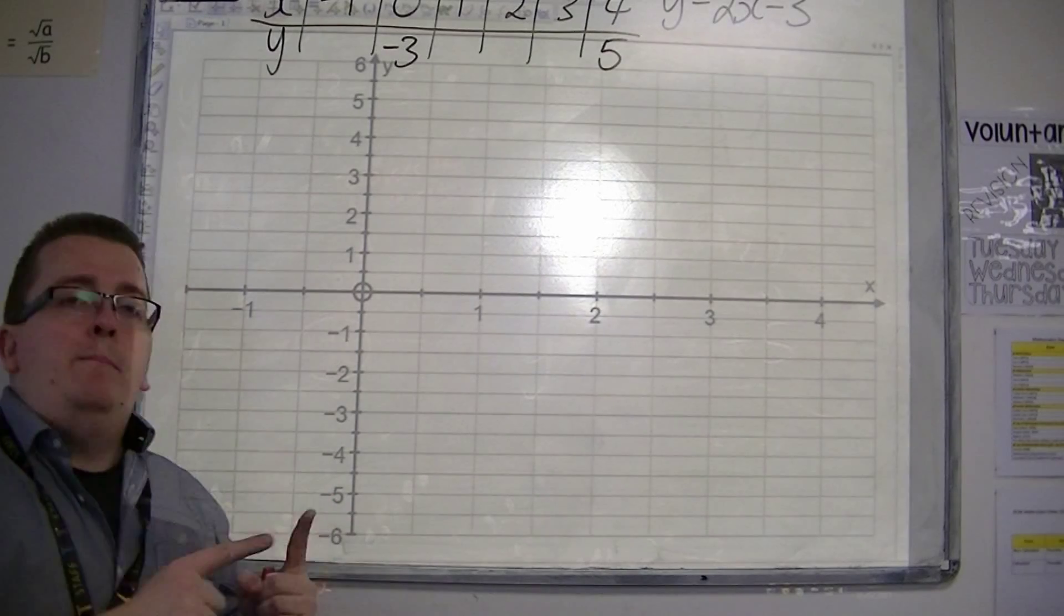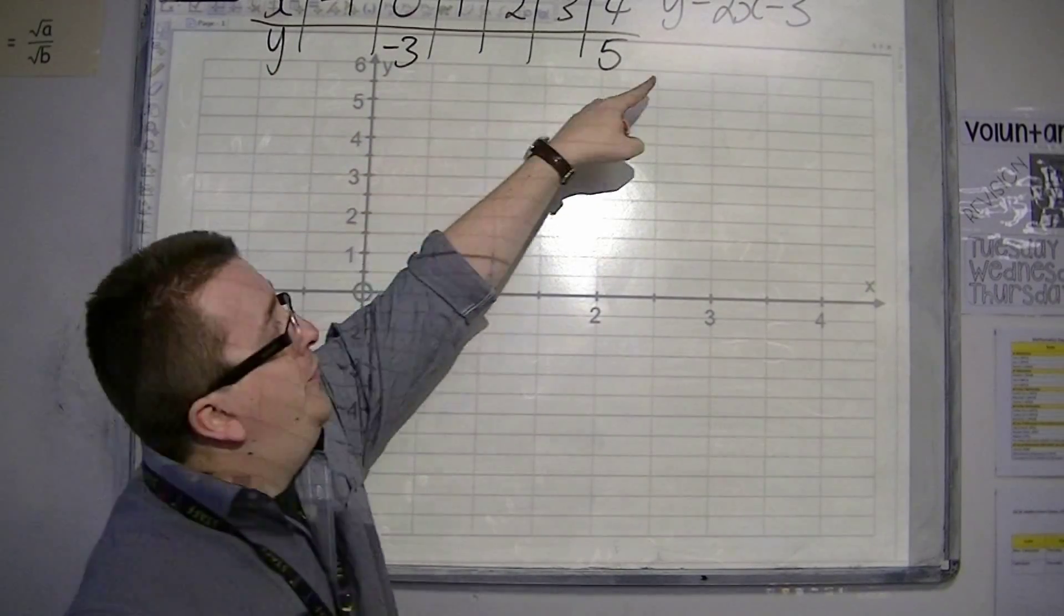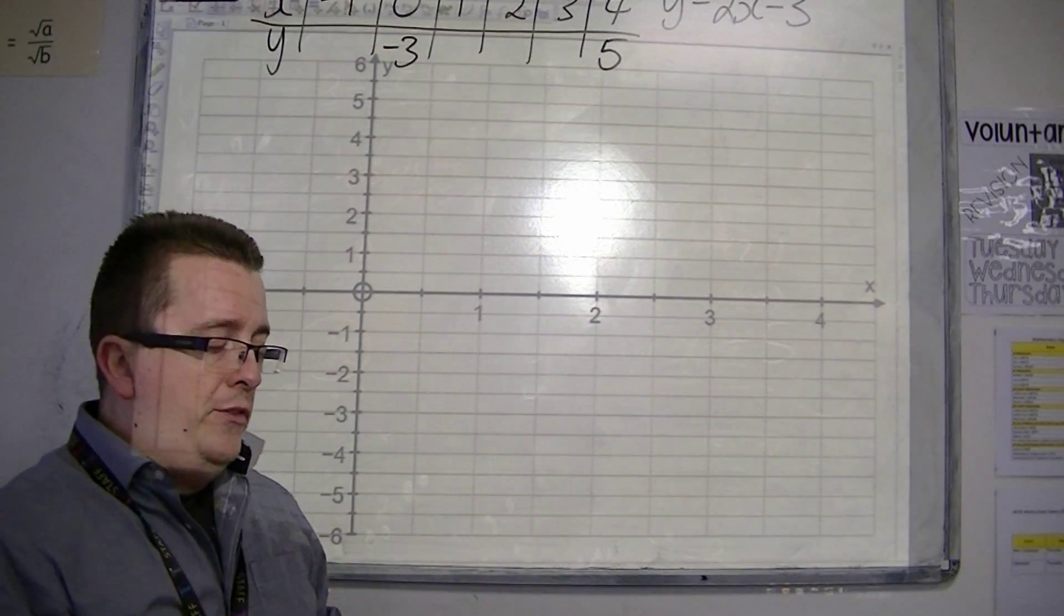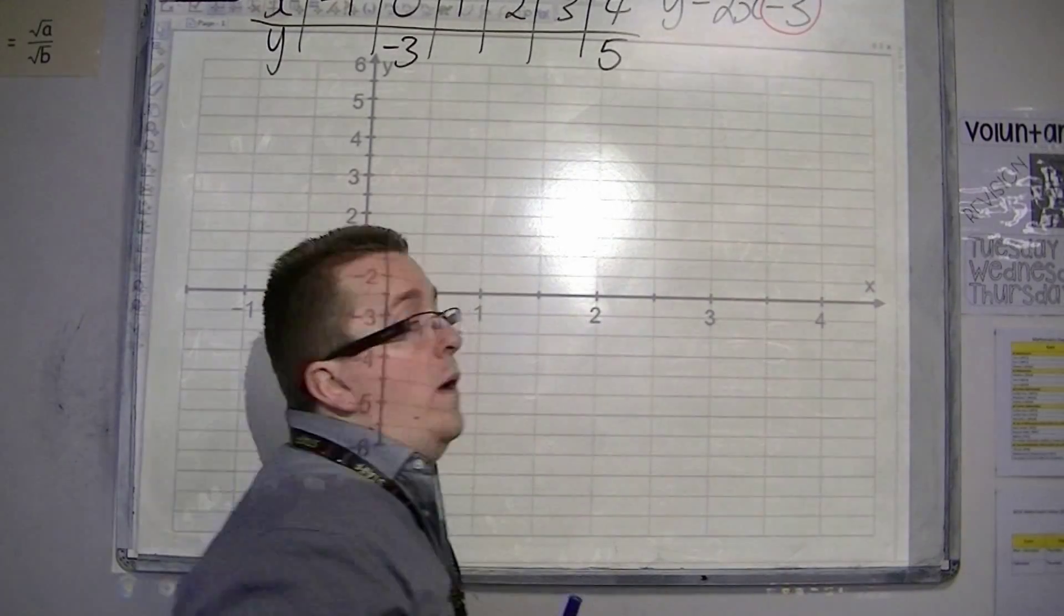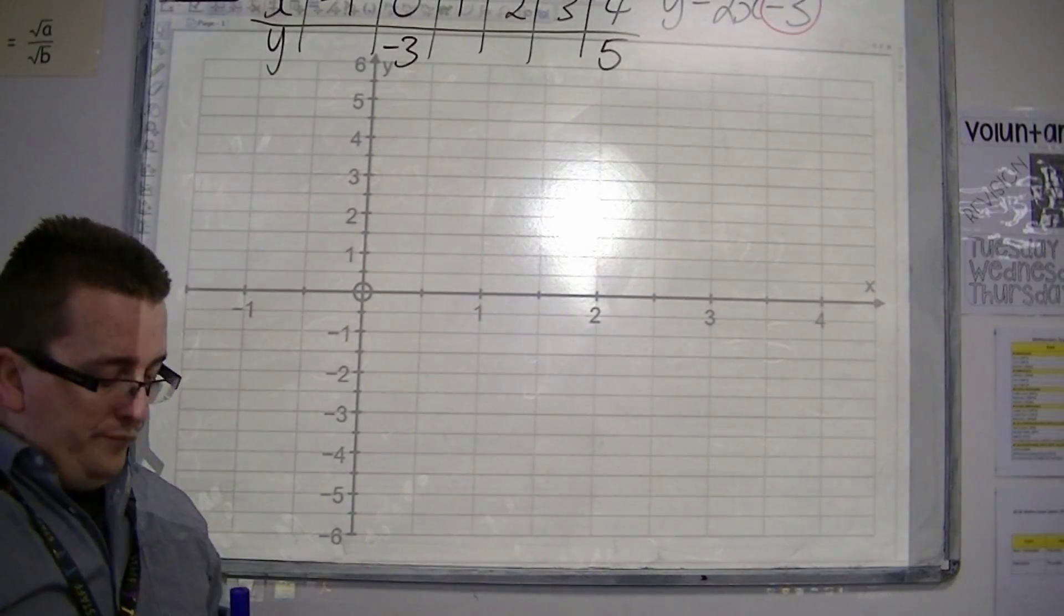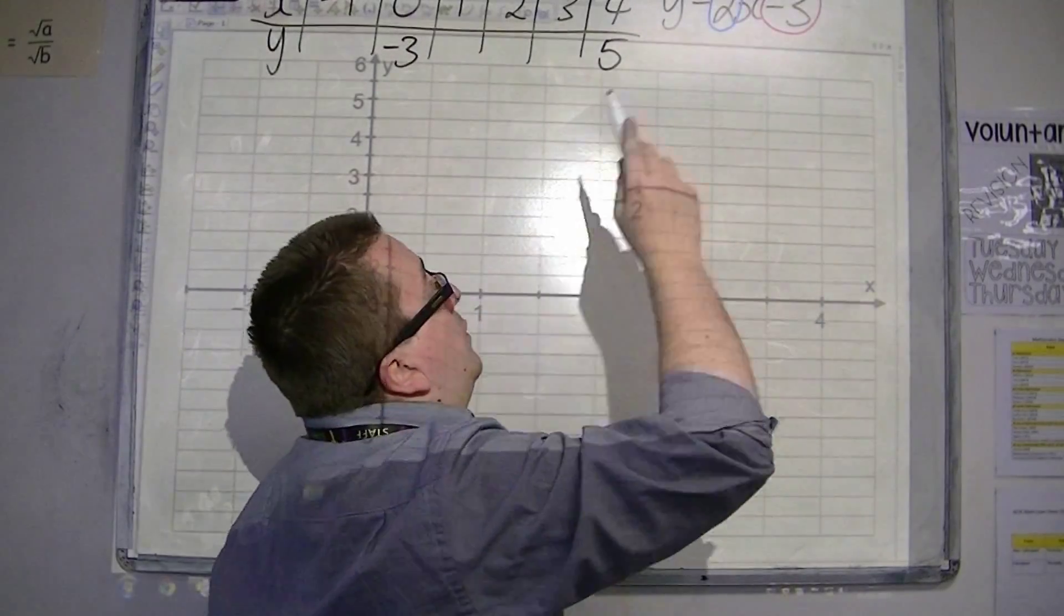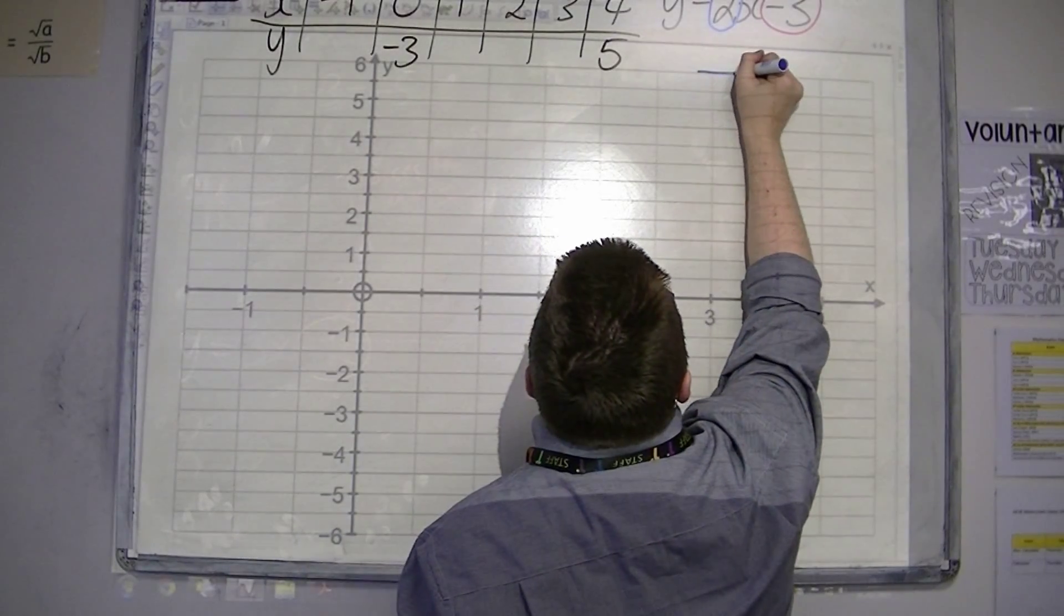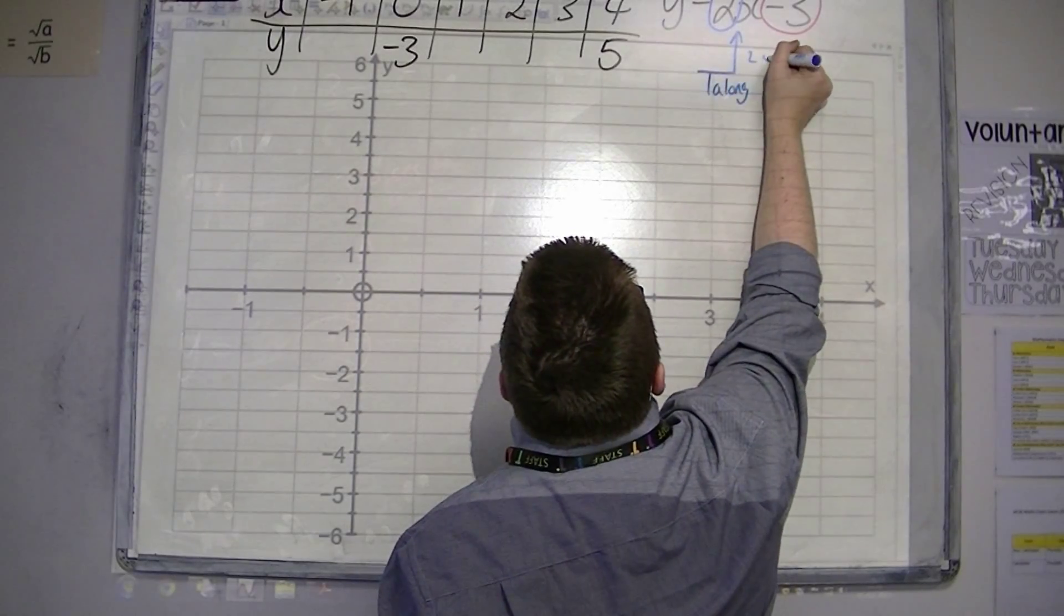Now, what you need to remember is that from beforehand, when we plotted y equals 2x minus 3, there were two important bits of information. There was the minus 3 that told you where it crossed the y-axis, and the 2 that tells you the gradient, so that for every one along, you were going 2 up. One along, 2 up. One along, 2 up. One along, 2 up.